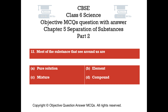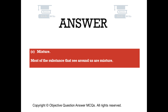Question number 12. Most of the substances we see around us are: Option A, Pure solution. Option B, Element. Option C, Mixture. Option D, Compound. The right answer is Option C — Mixture. Most of the substances we see around us are mixtures.